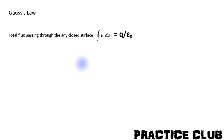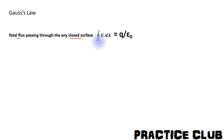Next we are going to discuss Gauss's Law. Gauss's Law says that the total flux passing through any closed surface — that is, the integral of E·dA for the closed surface — is equal to q by epsilon.